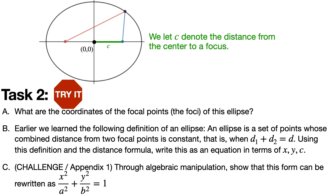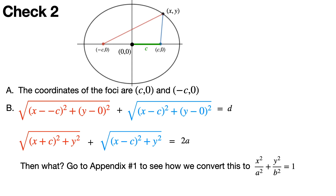The real challenge — only attempt if your algebra is very strong, but I encourage everyone to view the answer — is to show through algebraic manipulation that the focal point equation can be rewritten as x² / a² + y² / b² = 1. The coordinates of the foci are (c, 0) and (-c, 0). The red distance uses points (x, y) and (-c, 0) in the distance formula, the blue distance uses (x, y) and (c, 0), and combined they equal d = 2a for a horizontal ellipse.